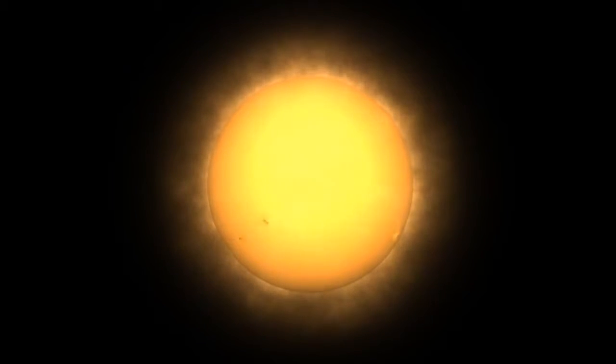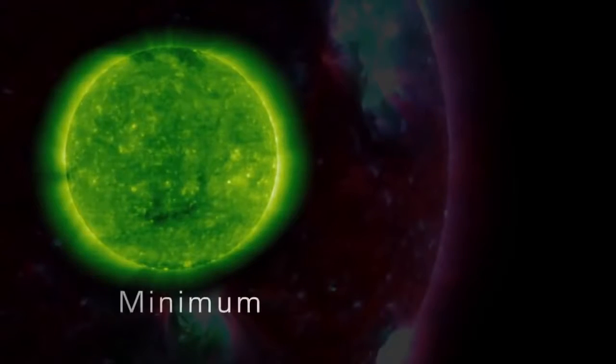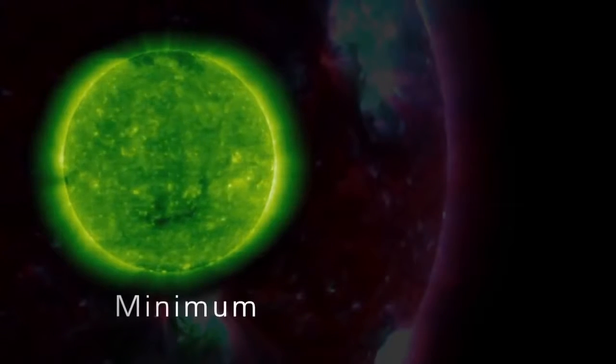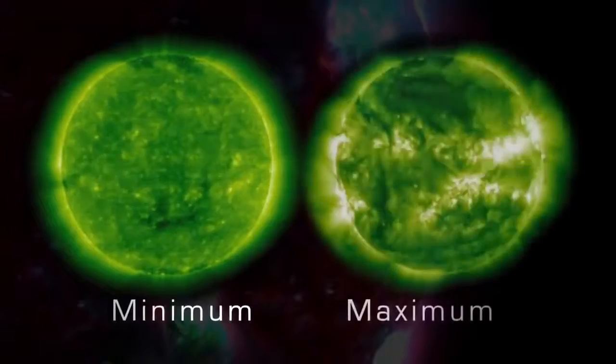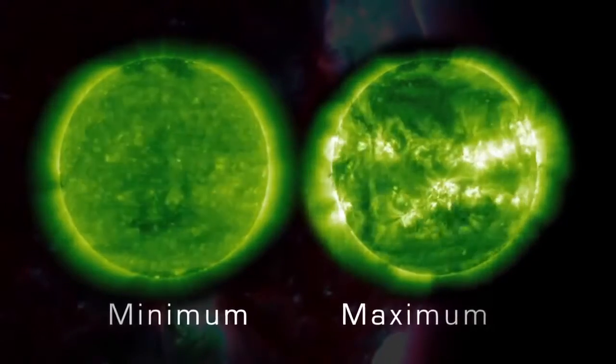During one cycle, the number of sunspots, a good indicator of solar activity, goes from low to high and back down to low. Solar minimum represents a period of time when sunspot numbers are relatively low, and solar maximum represents a period when sunspot numbers are relatively high.